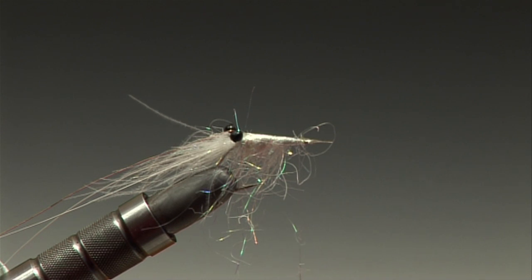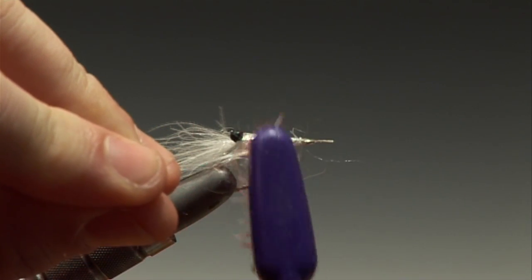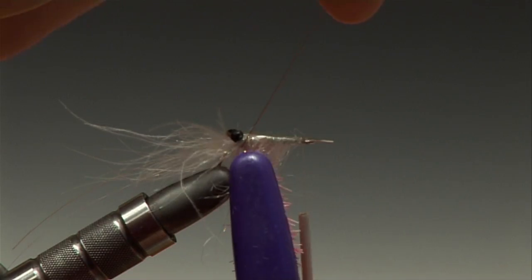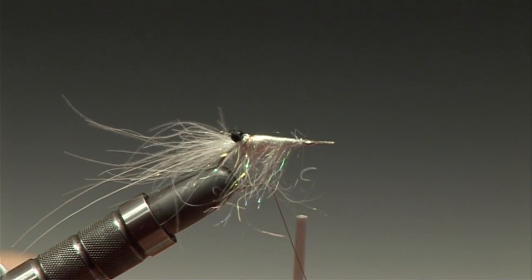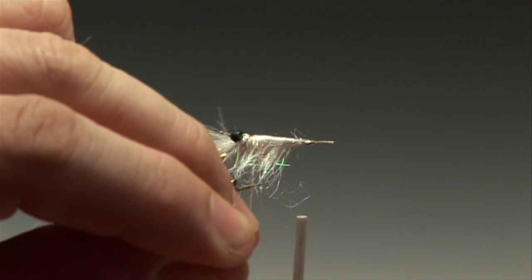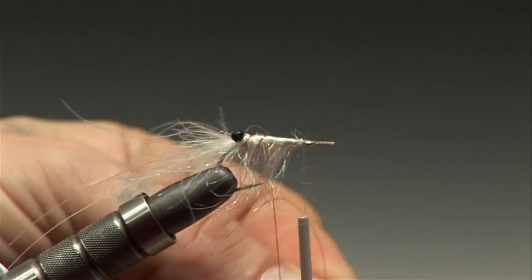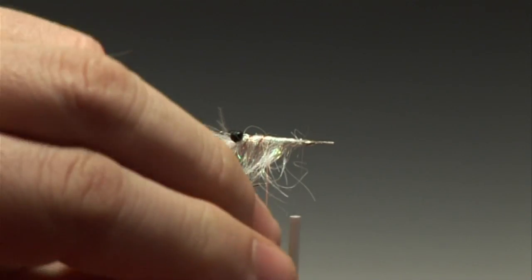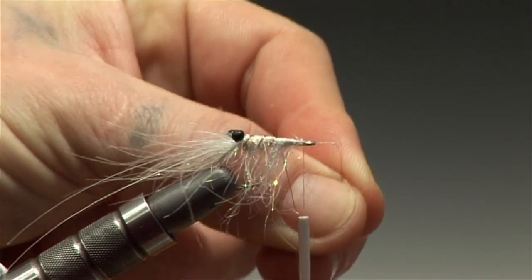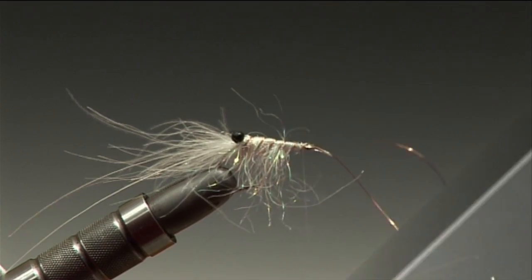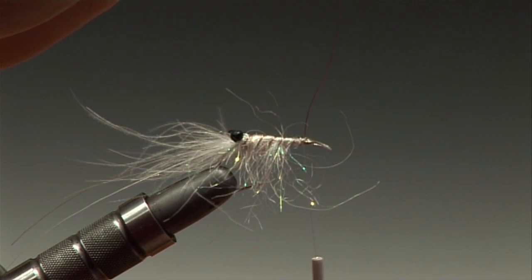Once you're happy with everything looking good you can go on to the next stage of putting in the rib. Now I like to use the toothbrush here just so we can brush all the leg fibers out so they're not caught with each turn of the rib. Four or five turns of rib should do it depending on the size of the fly. Once you've wound in the rib you can secure it just behind the hook eye.